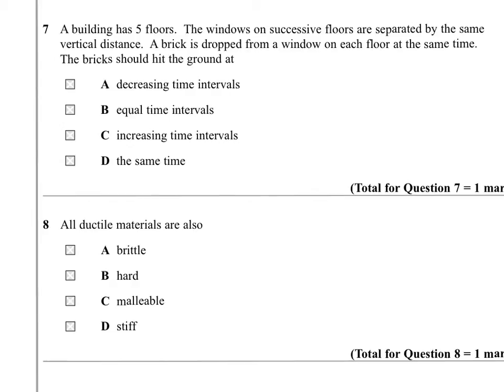Question seven. I've got choices between decreasing time intervals, equal time intervals, increasing time intervals, and the same time. I'm only going to draw two of them because all of them will behave exactly the same way. Both of these bricks will have G acting on them. They will both accelerate if we ignore air resistance and behave exactly the same way. The second one will never be able to catch up with the first one. They will always be separated as they're falling by the height between the two floors. That will be true for all five of them.